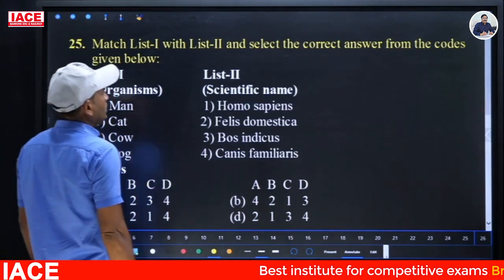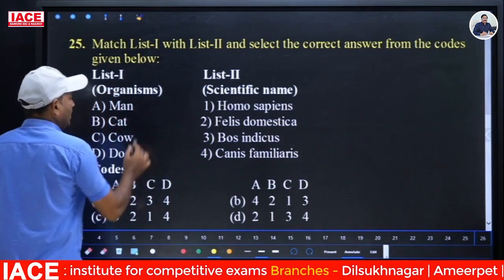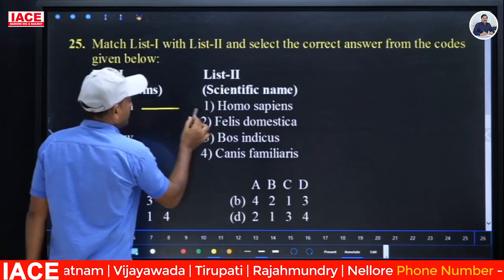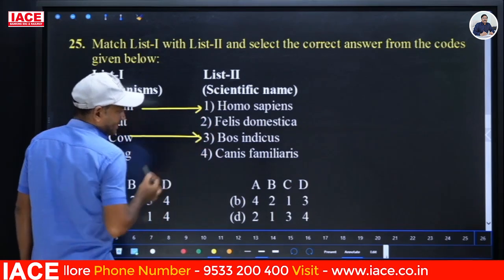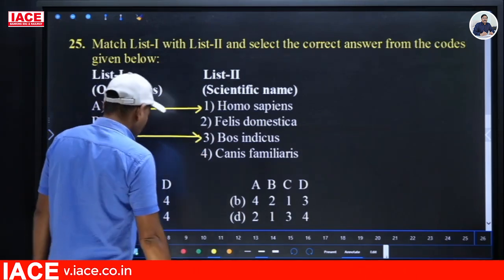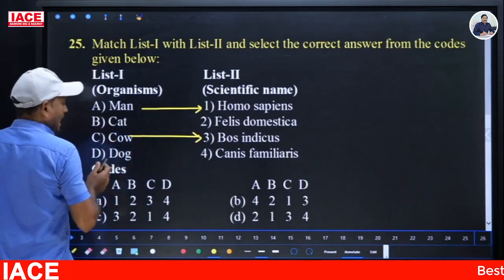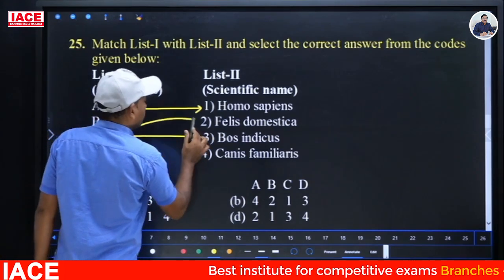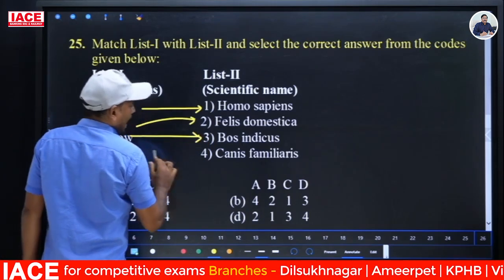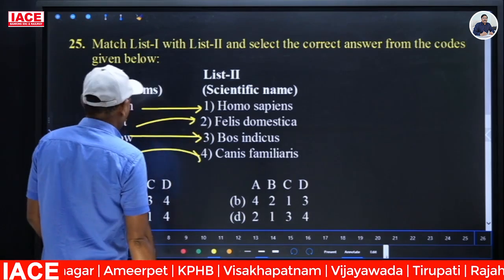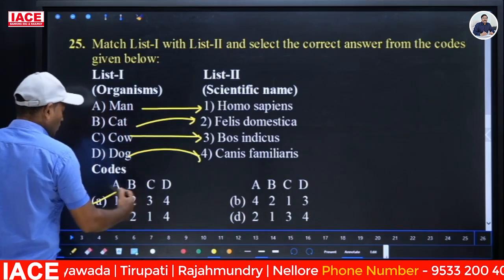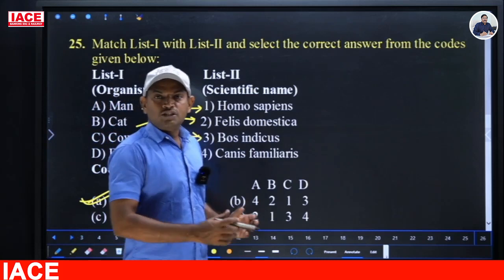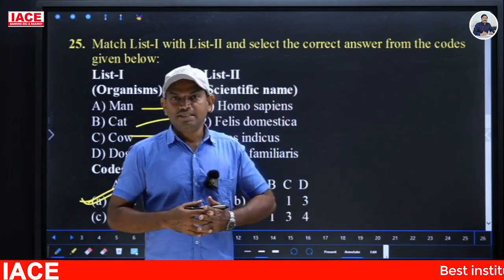Next: Match Man, Cat, Cow, Dog with their scientific names. Man — Homo sapiens; Cow — Bos indicus; Cat — Felis domestica; Dog — Canis familiaris. Sequence 1, 2, 3, 4. Option A — 1, 2, 3, 4 is the right answer. That's all about this particular handout session. I wish you all the best. Thank you for watching.